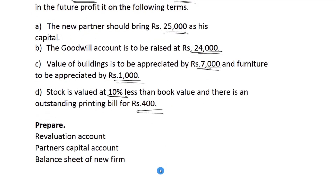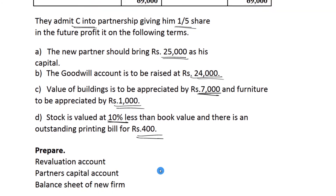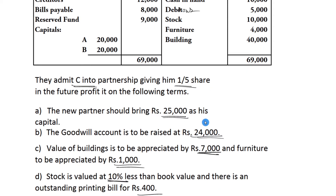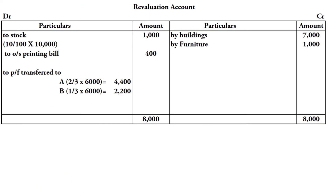First of all, revaluation account. DR and CR. We start with the credit side - increases go to the credit side. High values go to credit, low values go to debit.